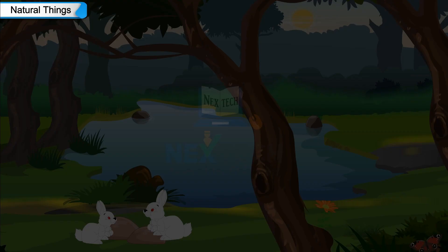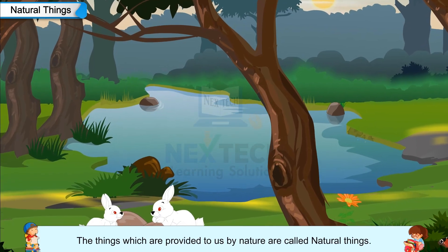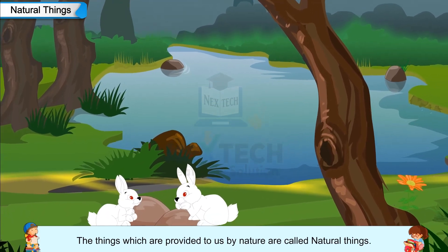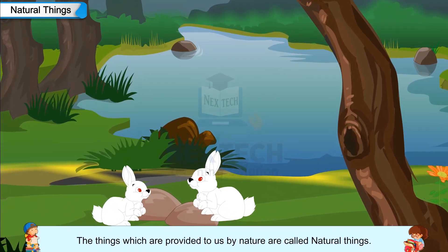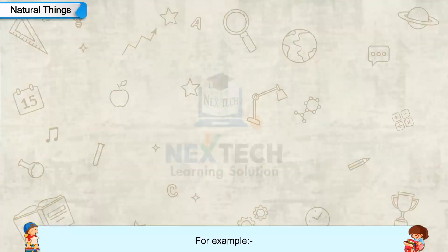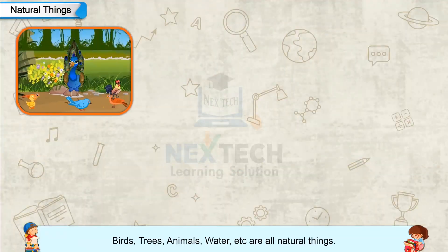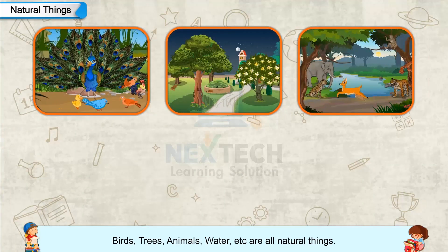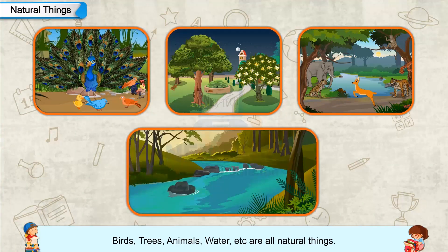Natural things: the things which are provided to us by nature are called natural things. For example, birds, trees, animals, water, etc. are all natural things.